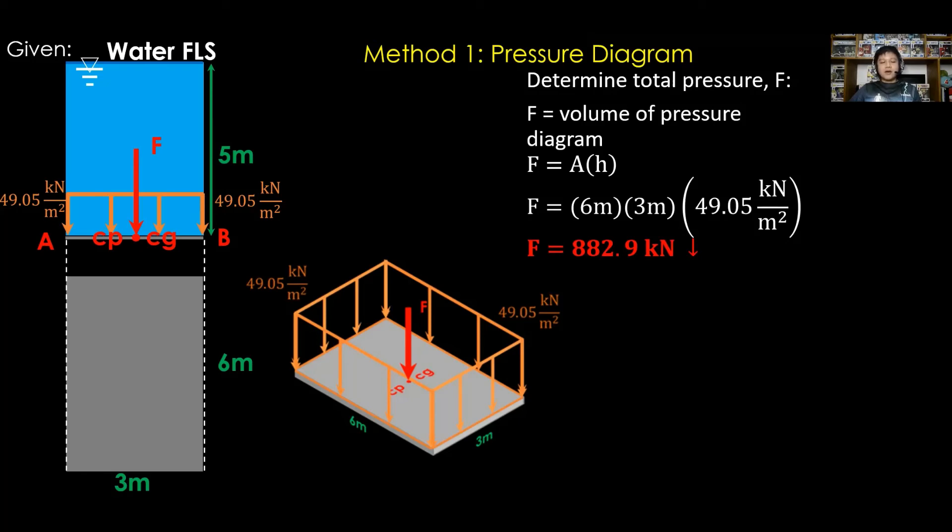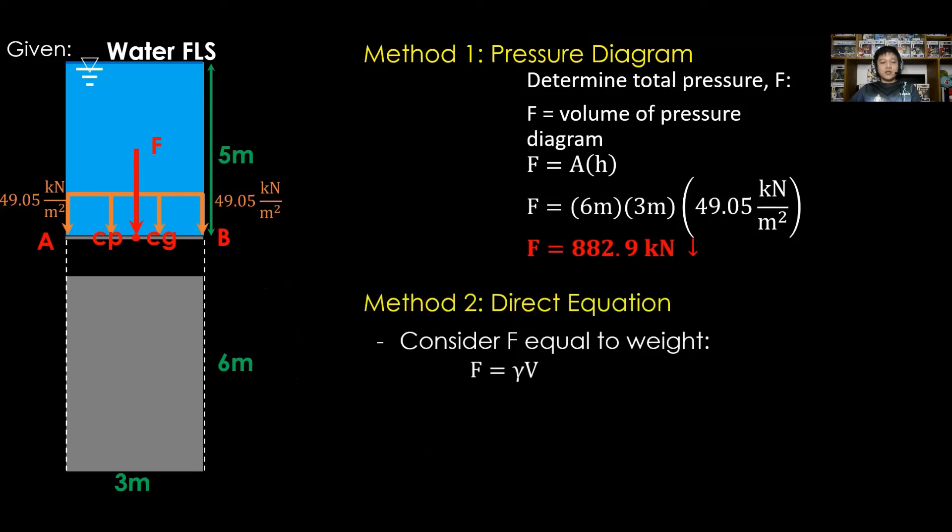Let us compare this to our second method, which is the direct equation, the weight of fluid equation. For F, it is equal to the weight W, that is gamma times volume. Substitute gamma, that is 9.81 kilonewtons per cubic meter, and the volume of the fluid above this horizontal surface, that is 6 by 3 by 5 meters. Therefore, F is equal to 882.9 kilonewtons, which is the same as the pressure diagram solution.